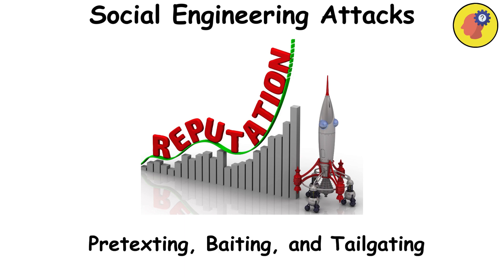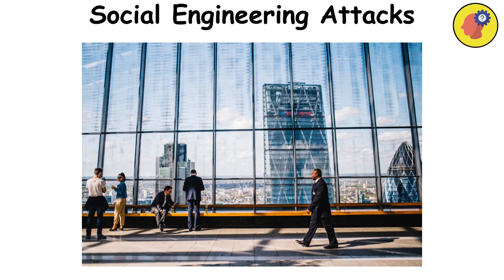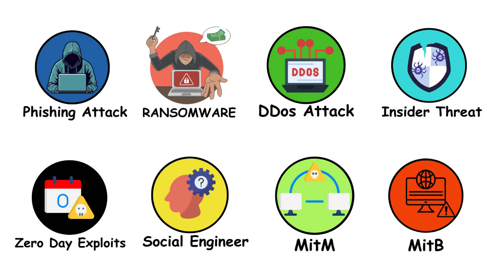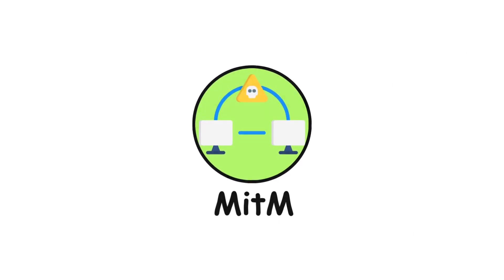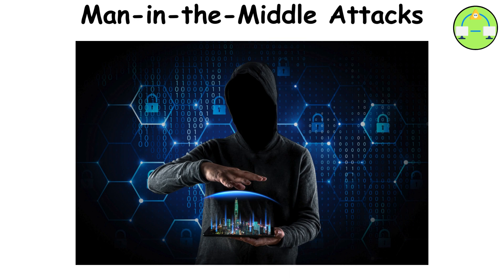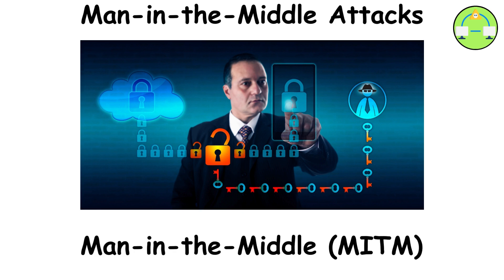Pretexting, baiting, and tailgating are a few examples of social engineering techniques that can be used against both people and companies. A man-in-the-middle (MITM) assault occurs when a cybercriminal eavesdrops or manipulates data by intercepting communication between two parties.